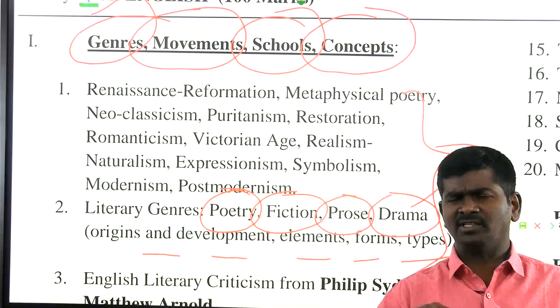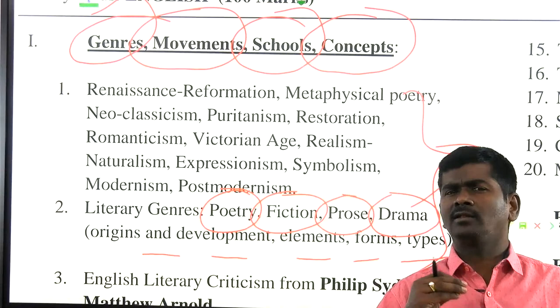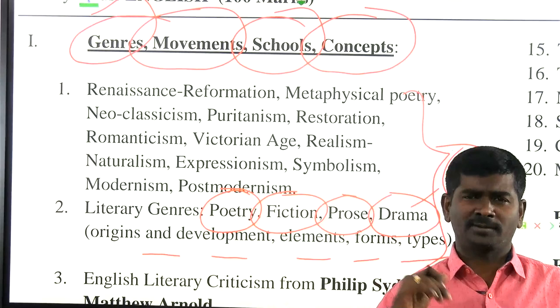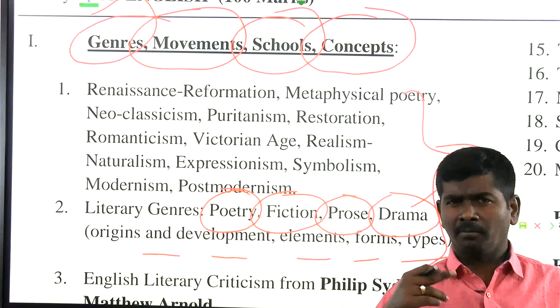As an aspirant of Junior Lecturer or Degree Lecturer, you must have thorough knowledge of nearly 30 to 40 popular definitions of English literature that were repeated in NET, SET, JL, DL examinations. You also need to focus on the various forms of poetry, beginning from epic, mock epic, sonnet, elegy, pastoral elegy, ballad, lyric, ode, haiku, limerick, and lay.